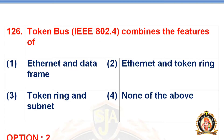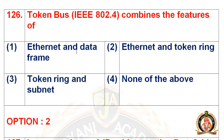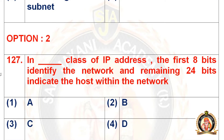Question 126: The token bus IEEE 802.4 combines the features of. Options are Ethernet and data frame, Ethernet and token ring, token ring and subnet, and none of the above. The right option is the second option, that is Ethernet and token ring.